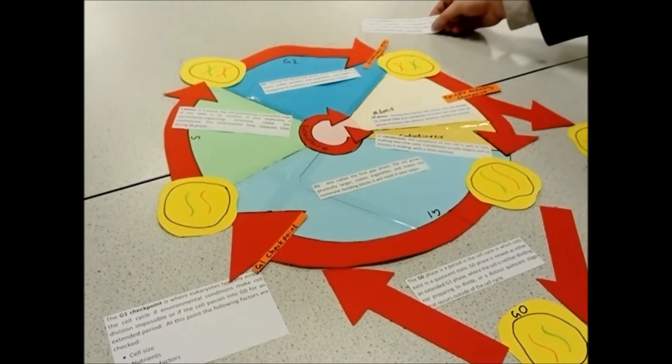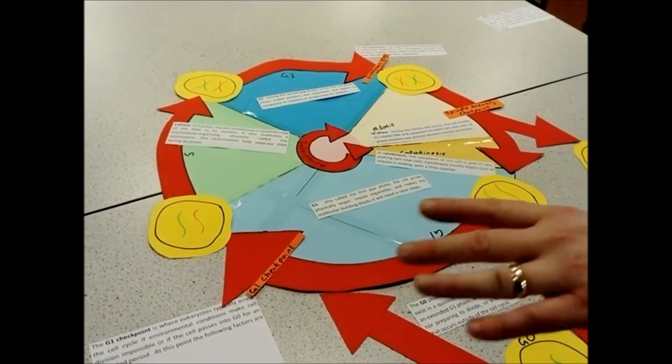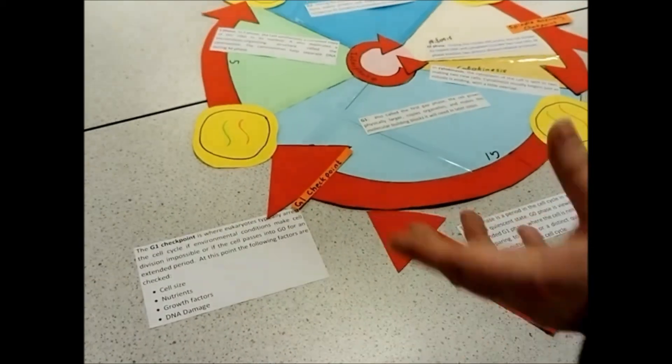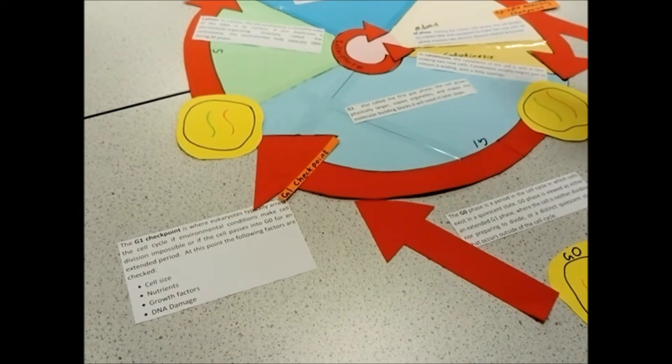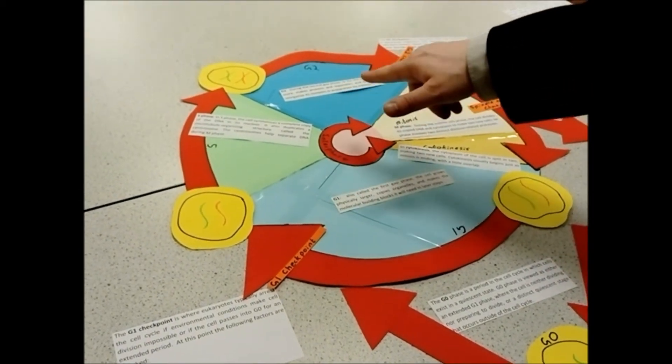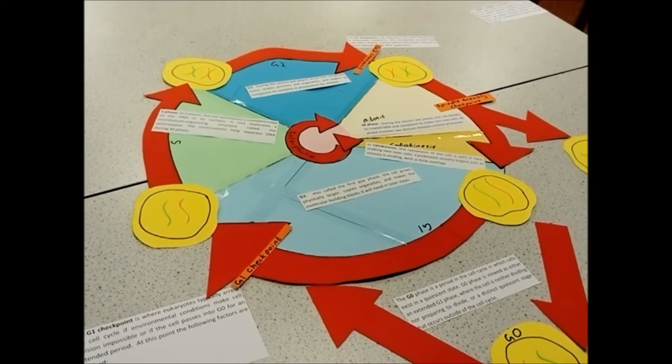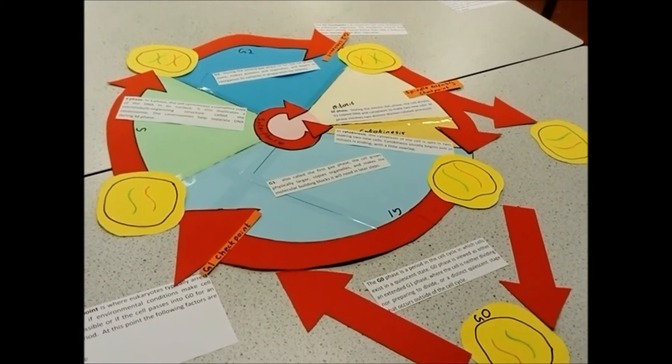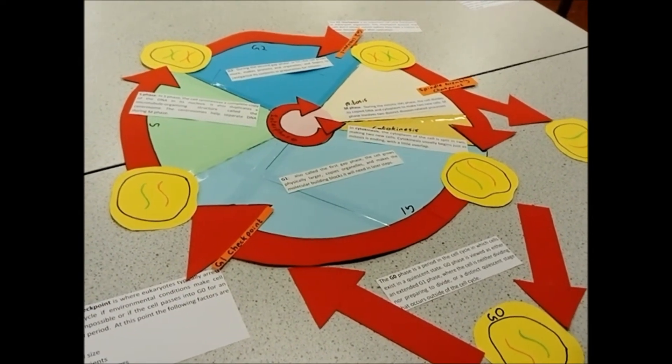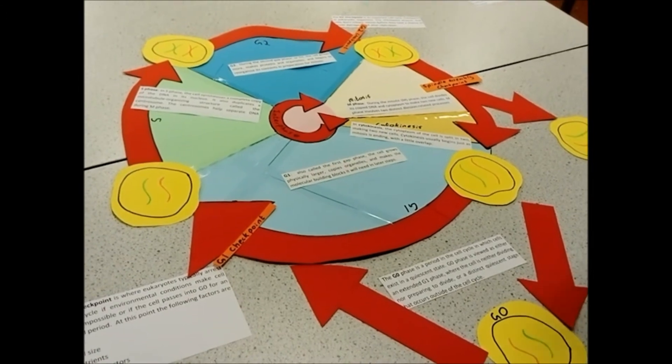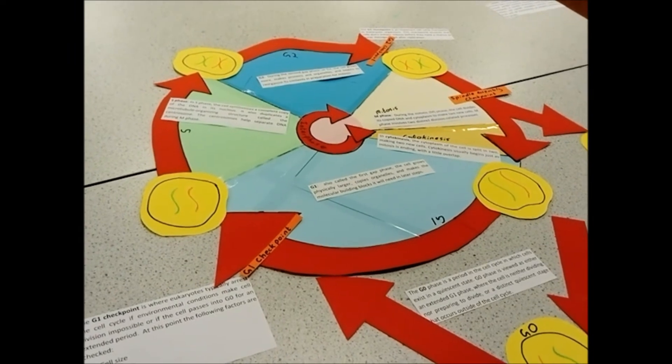Your G2 checkpoint carries on and checks that it's got enough growth factors and nutrients and such. But more importantly, it checks that the DNA has not been damaged during DNA replication. Because during DNA replication, all of your DNA is unraveled from those histone complexes, and it's spun out. So, you could quite easily get a substitution happening, or a deletion, or something wrong with the DNA.